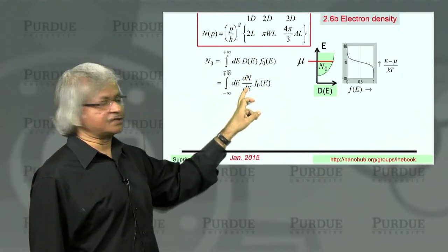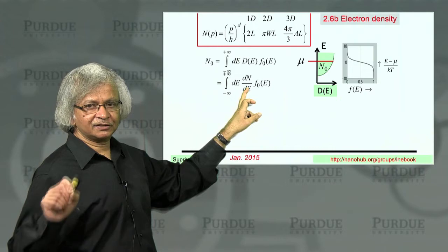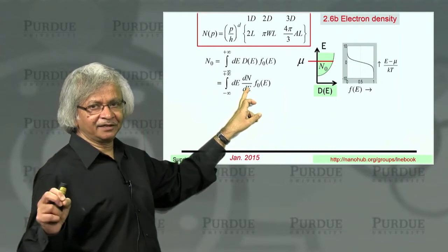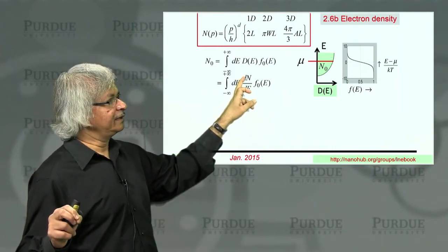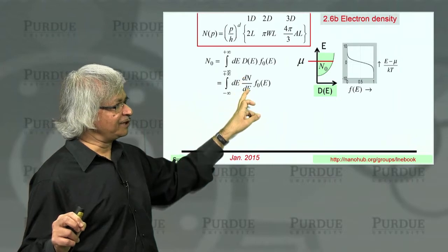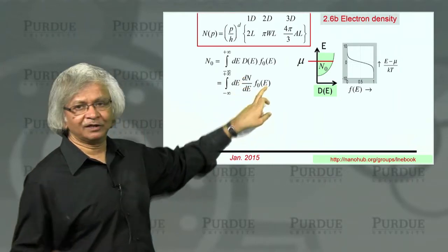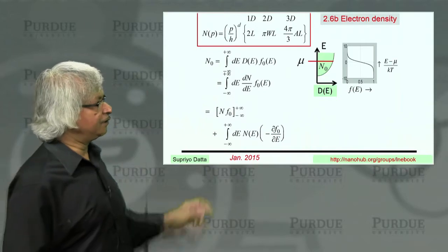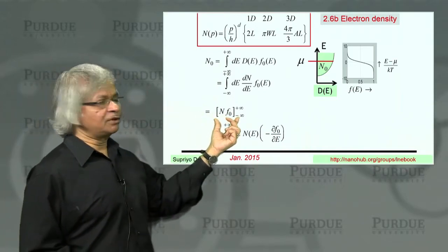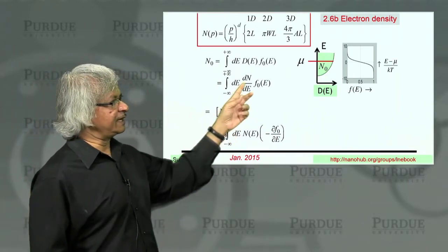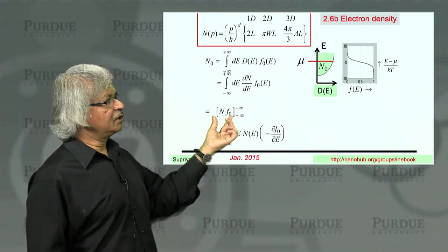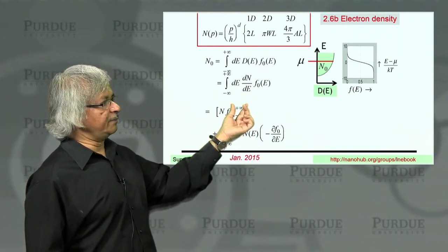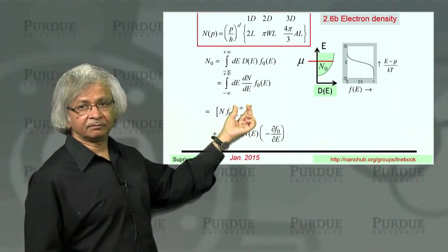The derivative is on the first function. But there is this trick of integrating by parts whereby the derivative, instead of being on the first function, is transferred over to the second function. So if you do that, you'll have first what you call the surface term, that is N times F0, whose values at the two limits you need, minus infinity and plus infinity.